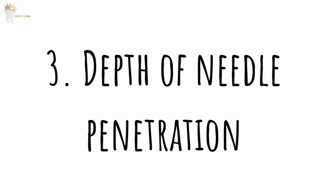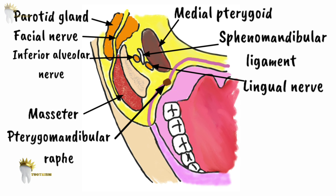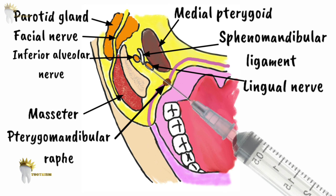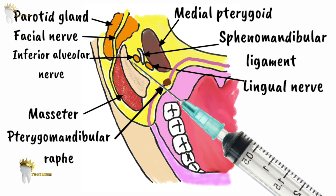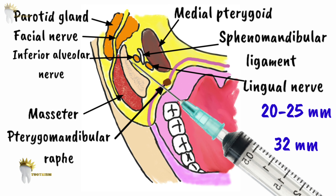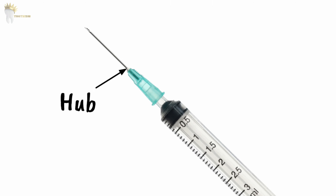For depth of needle penetration, with the bevel facing bone, the needle is advanced until bone is gently contacted. In most patients this depth is 20–25 mm, which is why a long needle of 32 mm is used. Approximately two-thirds to three-fourths of the needle length should be in the tissues. The needle should never be inserted fully to the hub, as the hub is the weakest part; if it breaks while fully within the tissues, retrieval becomes very difficult.